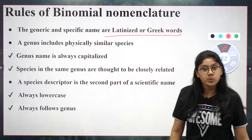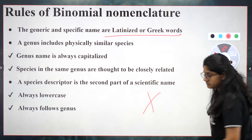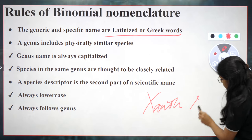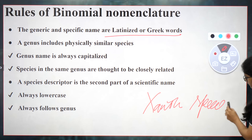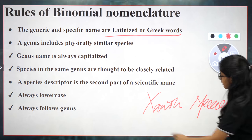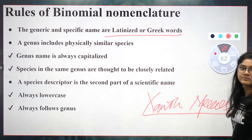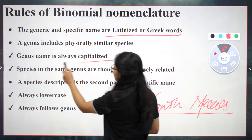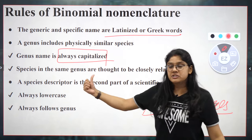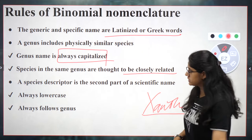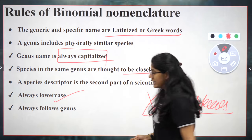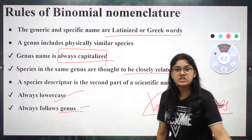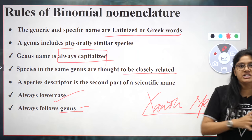Here is the proper guide on how to name an animal. The naming will always be in Latin or Greek words. The first word — the genus — will be in capital letters. The species name will be in italics, in lowercase, with a gap between genus and species. If writing by hand, there should be an underline. Species of the same genus will be closely related, and the species name always comes after the genus name.